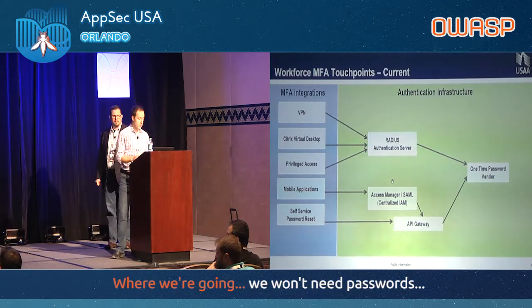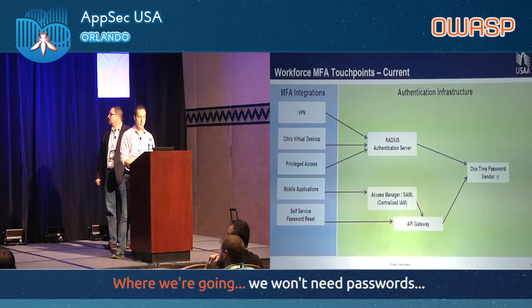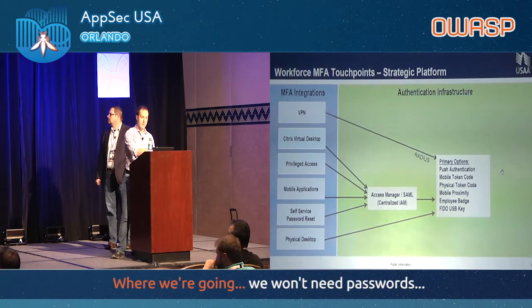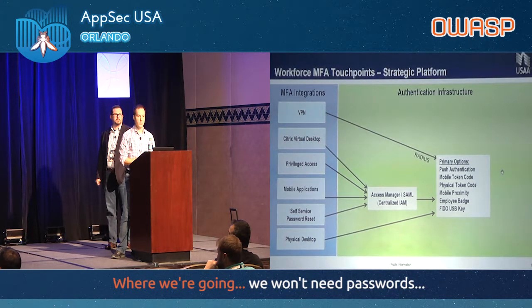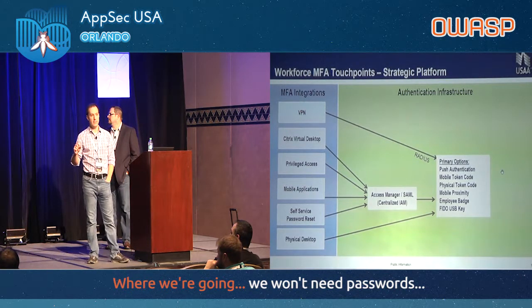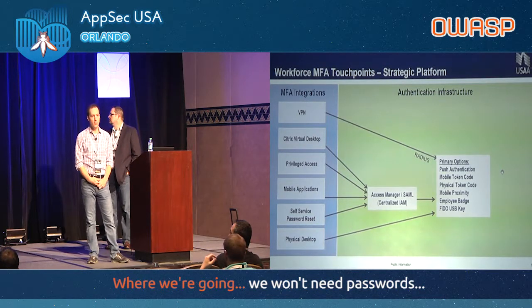On the left-hand side you can see the environment before we made changes: the legacy VPN environment, virtual desktop environment, and the privileged access system all used RADIUS authentication, and we had started consolidating on a centralized access manager solution. Self-service password reset was also using the one-time password infrastructure. What we've done now is shift everything into one central location using SAML — VDIs, the privileged access system, mobile applications, and self-service password reset all focus on that one single component. We can change that experience in an agile approach without making any changes to our back-end infrastructure.